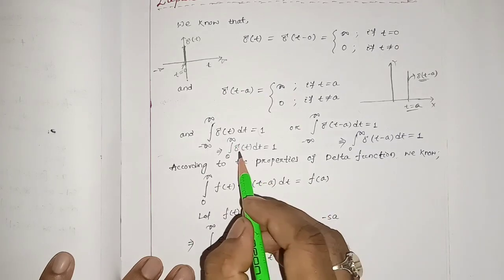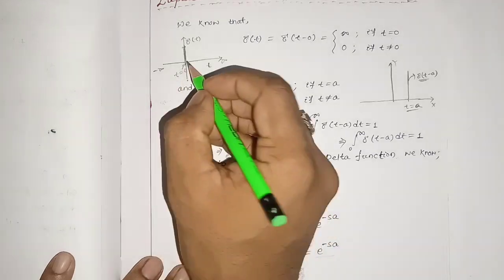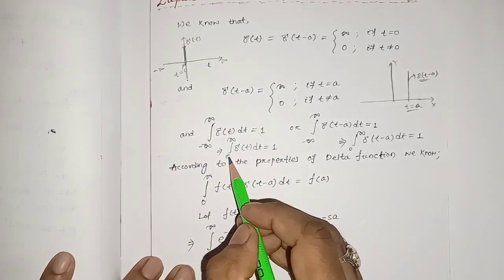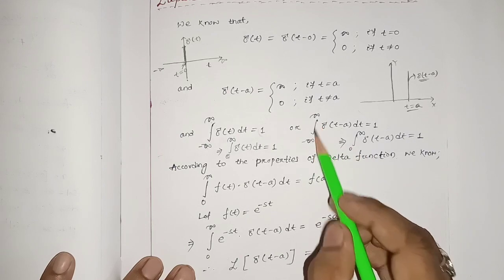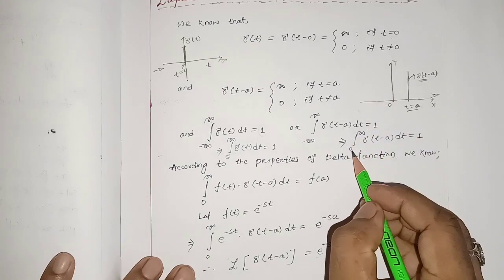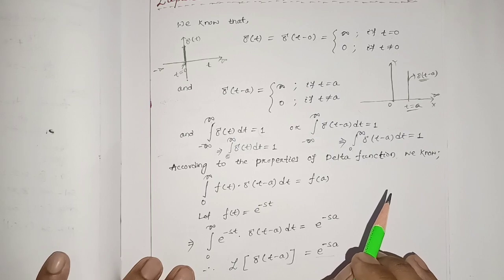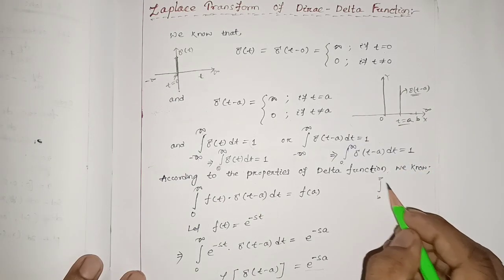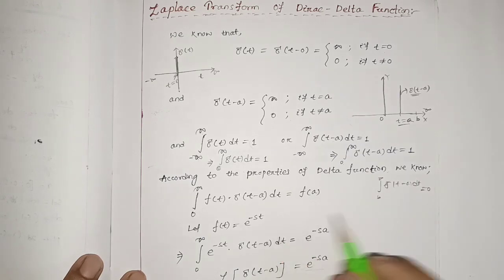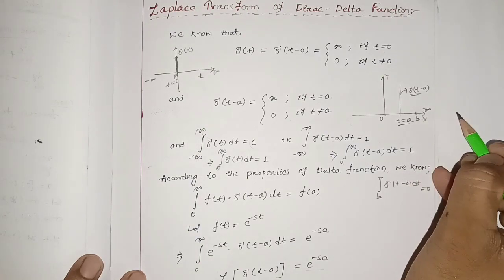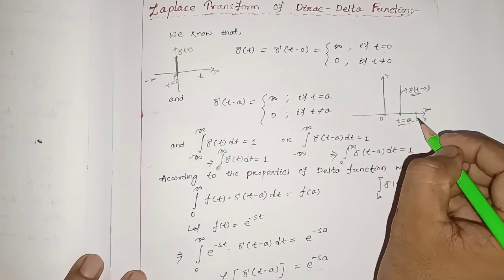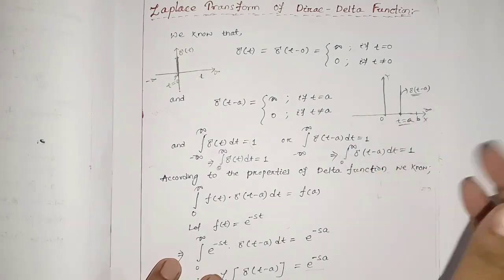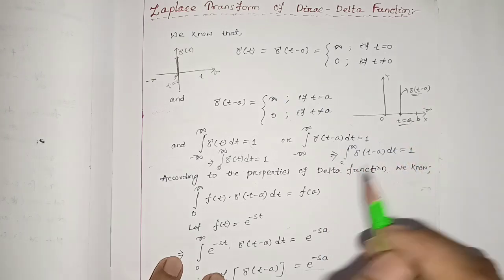The integration from minus infinity to plus infinity can also be written as 0 to infinity: ∫δ(t) dt = 1, because at t equal to 0 the delta function exists. Similarly, ∫₀^∞ δ(t - a) dt = 1. However, if we consider the limit from b to infinity where b > a, then ∫_b^∞ δ(t - a) dt = 0, because the point t = a is no longer included. Since our lower limit is 0 and t = a is positive, t = a exists within the limit.